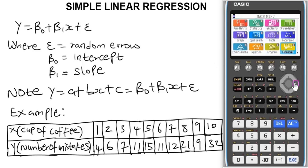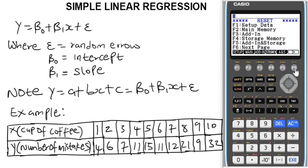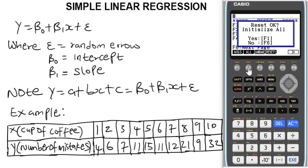To quickly reset it, navigate to System using this navigation button, then press Execute. Execute for this calculator stands for F1. When you get there press F5 to reset, then F6 for next page, then F2 to initialize all, then F1 which will begin to initialize all as indicated here.